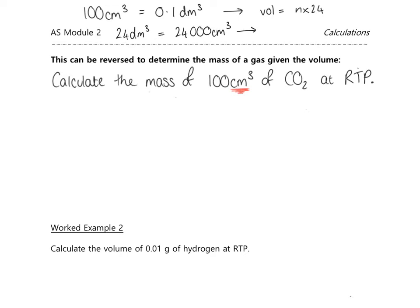One mole of any gas at RTP occupies 24,000 cm³. Using that in our equation, we keep our volume at 100 cm³ and do volume = n × 24,000. You don't have to convert units if you remember that 24 dm³ equals 24,000 cm³.